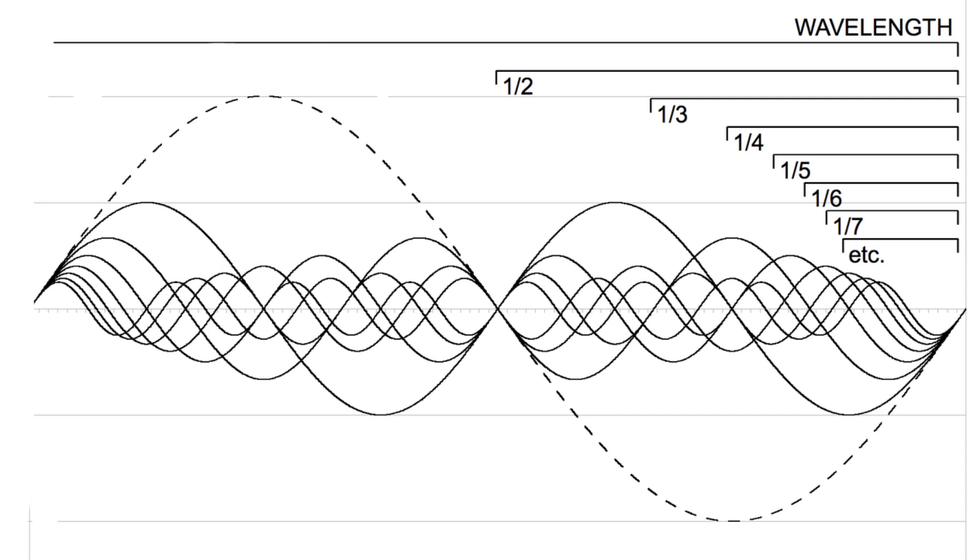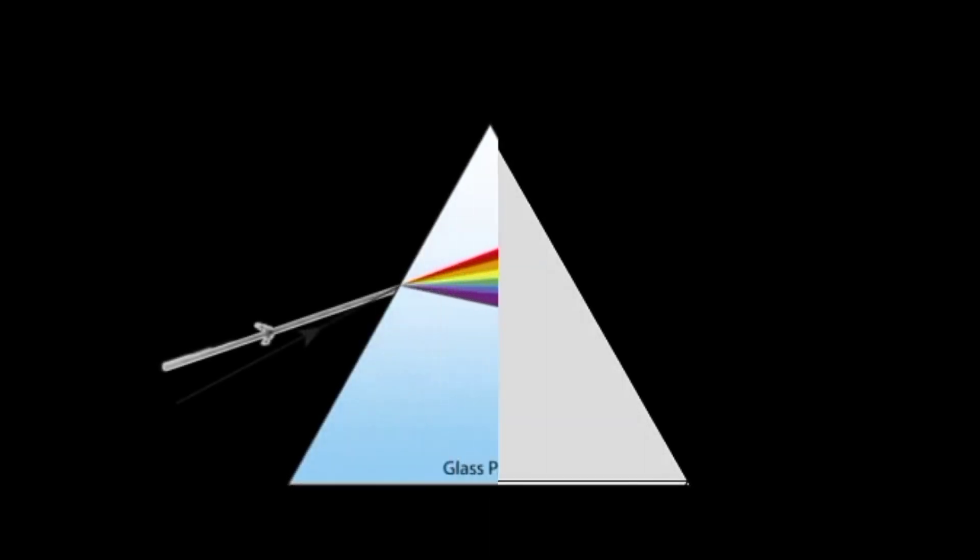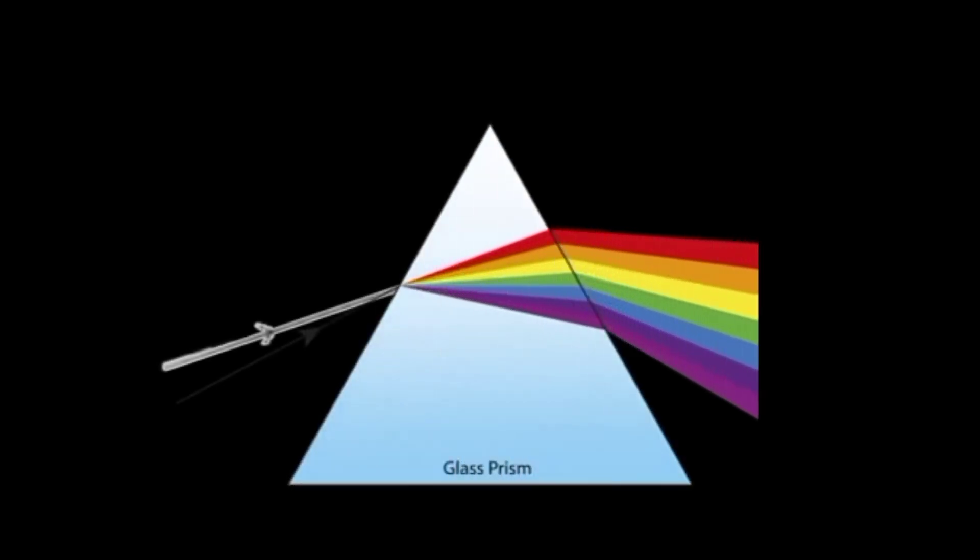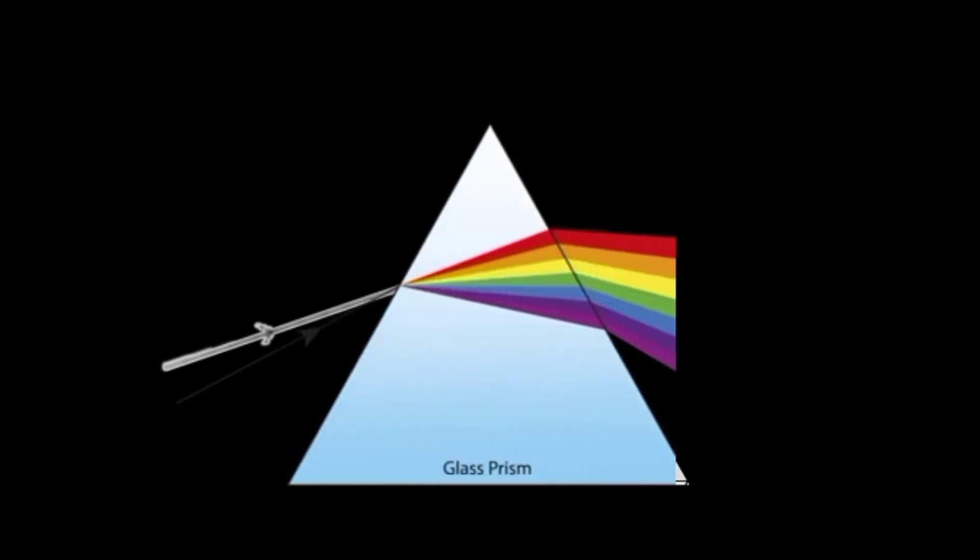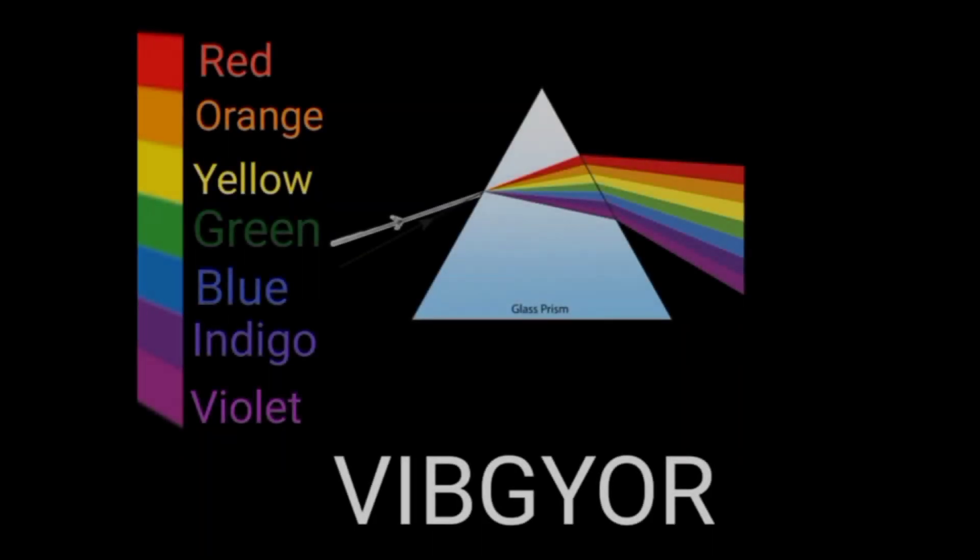For example, when white light passes through a prism, white light disperses and divides into seven colors. There is a continuous change in wavelengths from red, the longest wavelength, to violet, the shortest. Seven colors have different wavelengths and frequencies.